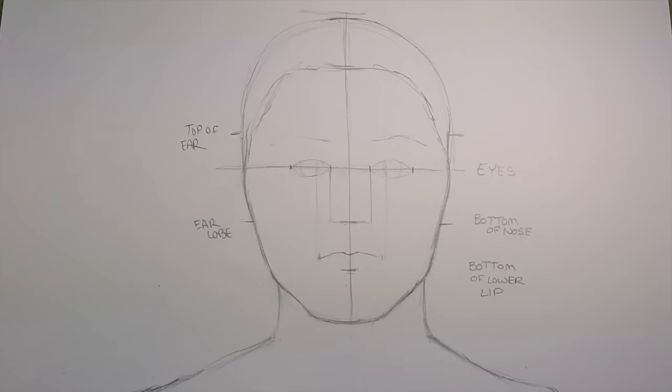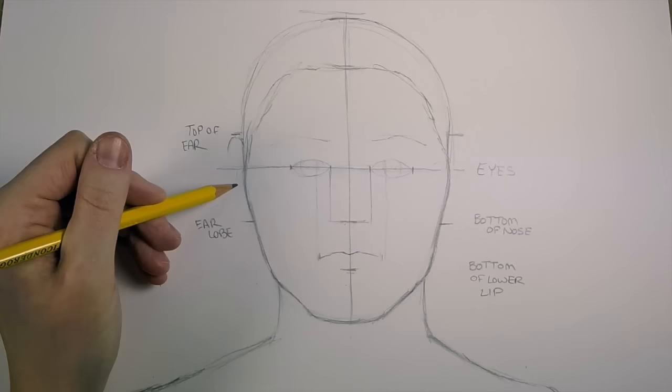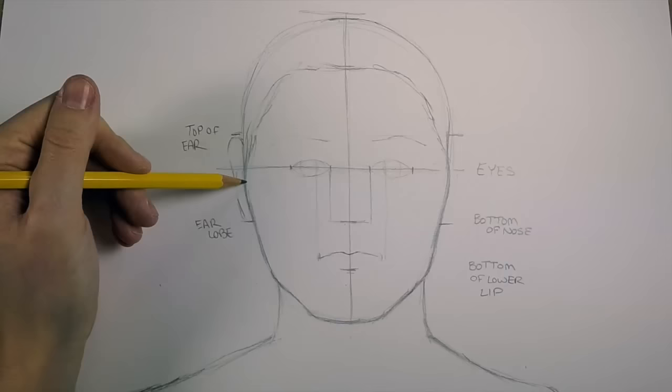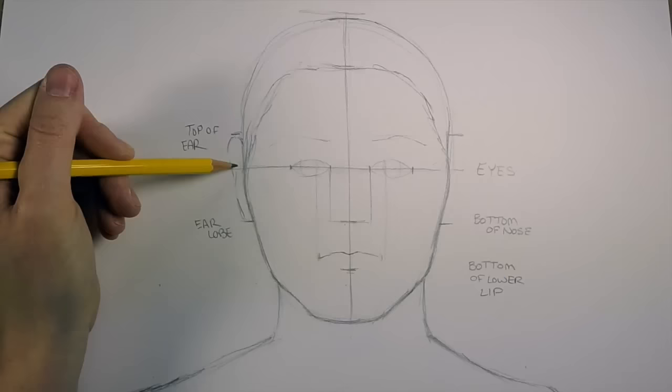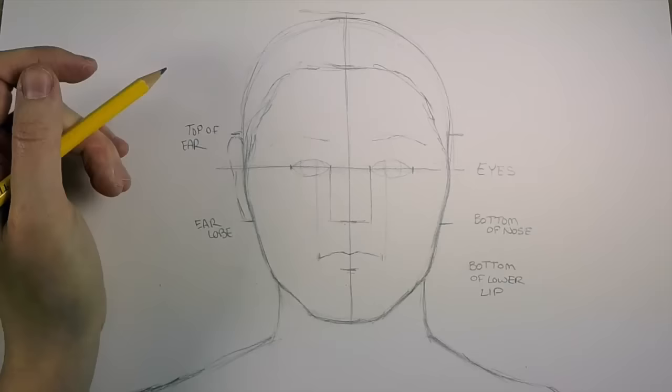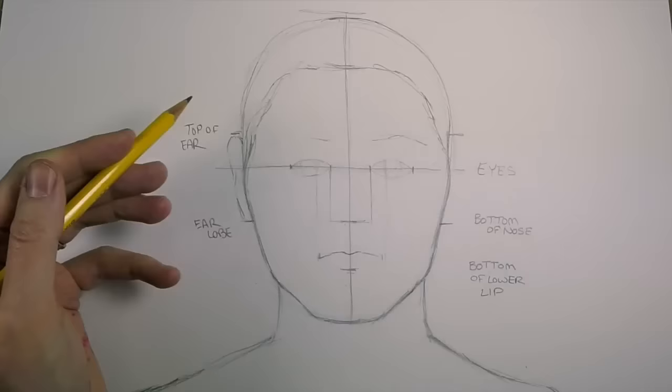One thing I see a lot when I'm teaching is people drawing ears in here, but you aren't really going to see too much of the ears when you're looking straight ahead—just a little bit of ear. What I notice, especially on people with short hair, is they don't tend to draw the hair in front of the ears, so their hair tends to go straight across right here.